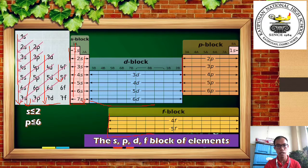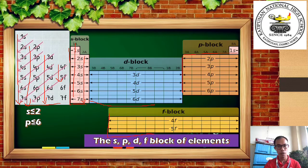Let's proceed to the p block. The p block runs from group 3A to 8A. If you count from 3A to 8A, there are 6 groups — confirming that p can hold a maximum of 6 electrons.